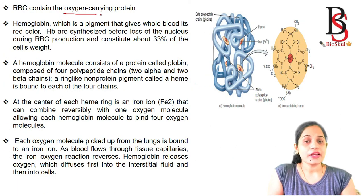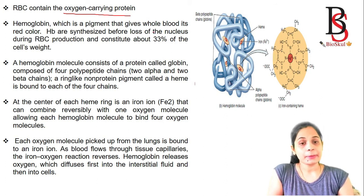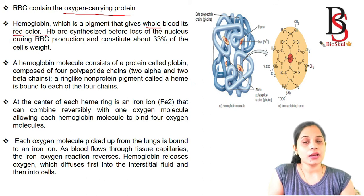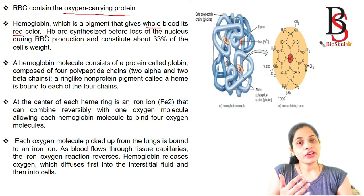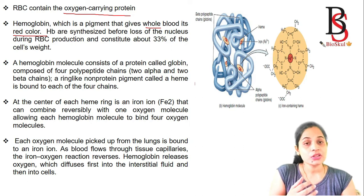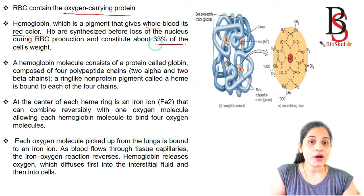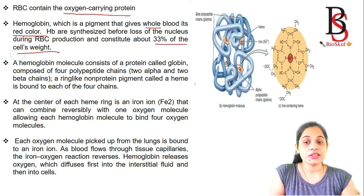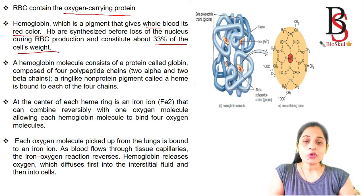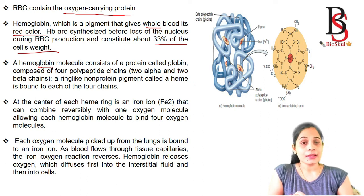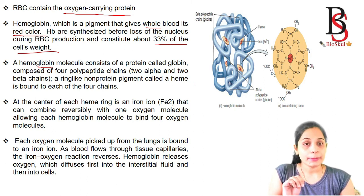The RBC contains the oxygen-carrying protein hemoglobin, which is the pigment that gives blood its red color. Hemoglobin is synthesized before the loss of the nucleus during erythropoiesis, and it constitutes 33% of the cell's weight. A hemoglobin molecule consists of a protein called globin, which is composed of four polypeptide chains.